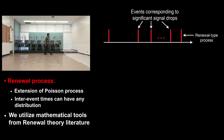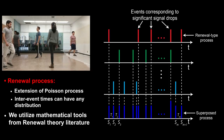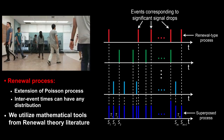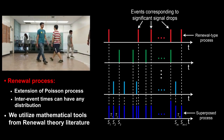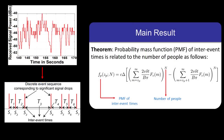More specifically, we propose to model the discrete event sequence corresponding to the movements of one person as a renewal-type process. We can then see that the discrete event sequence corresponding to the movements of n people is a superposition of n renewal-type processes. After some mathematical derivations, we can prove a theorem which characterizes the probability mass function of the inter-event times and relates it to the total number of people in the area.